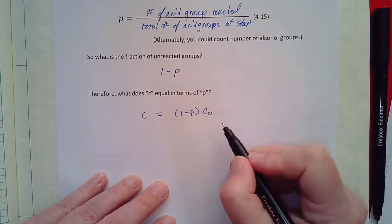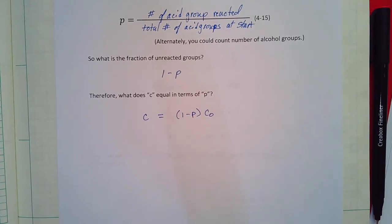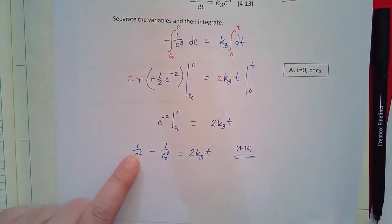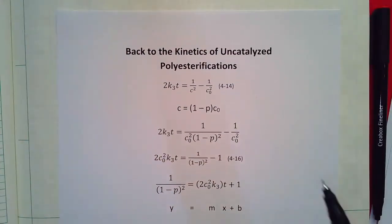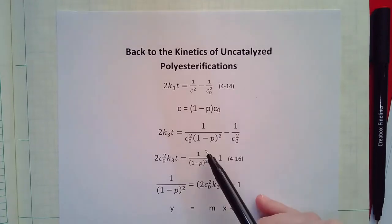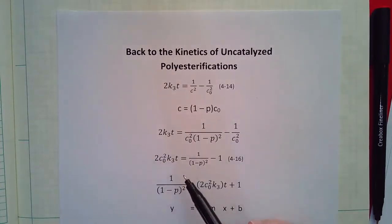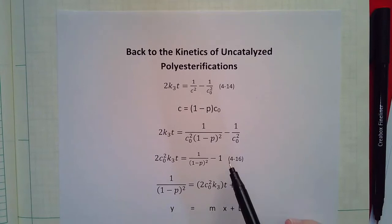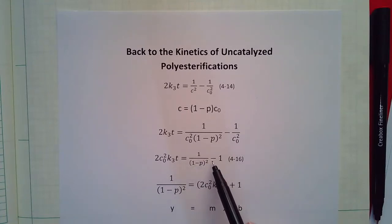Remember this equation is given to you on the exam. Now we plug c = (1−p)·c₀ into Equation 4.14. Substituting in and multiplying both sides by c₀², since that's a constant, we get Equation 4.16: a collection of constants (2k₃c₀²) times time equals 1/(1−p)² − 1. This can be rearranged into the form of a line: y = mx + b, where y = 1/(1−p)², x = time, slope = 2k₃c₀², and intercept = 1.